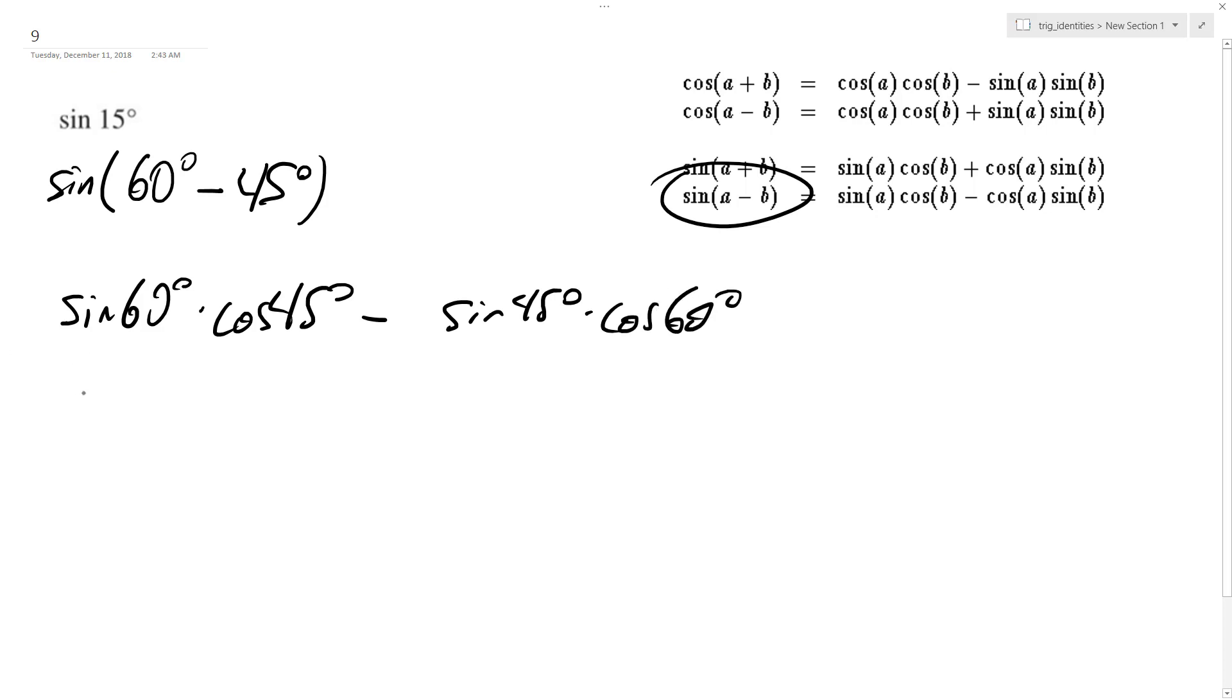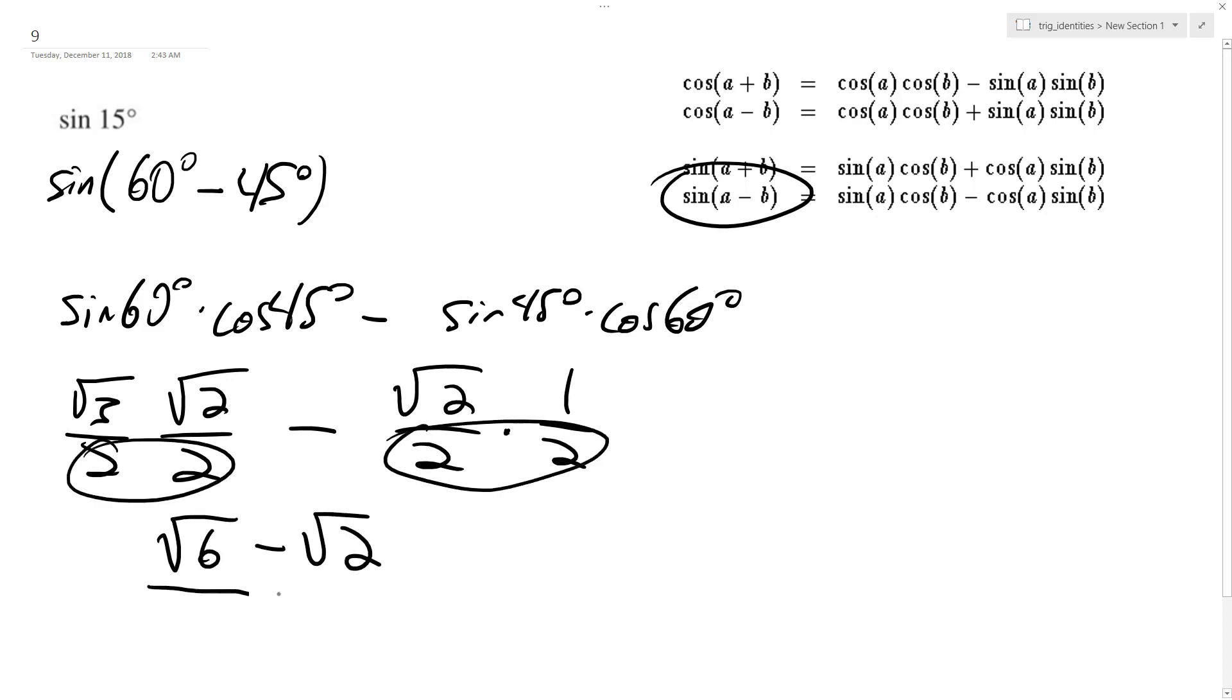So the sine of 60 degrees is root 3 over 2, cosine of 45 is root 2 over 2, minus sine of 45 root 2 over 2 times cosine of 60 is 1 half. So we end up with root 6 minus root 2, and these are both over 4, so that's all over 4.